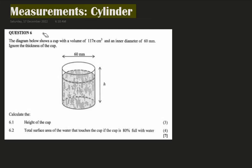I want to solve a question that has to do with measurements, specifically with a cylinder. The question says: a diagram below shows a cup with a volume of 117π cubic centimeters and an inner diameter of 60 millimeters. Ignore the thickness of the cup. For 6.1, they want us to find the height of the cup.